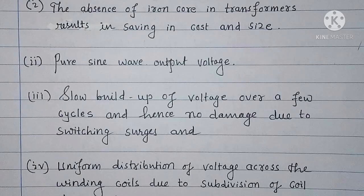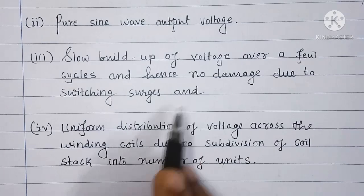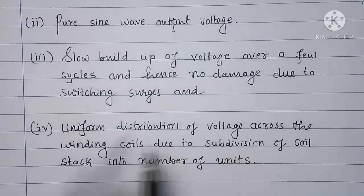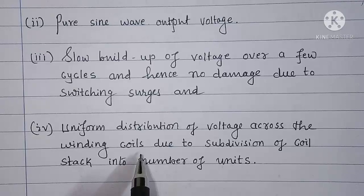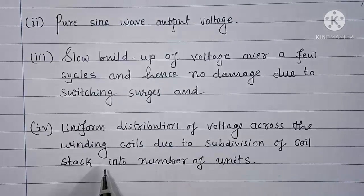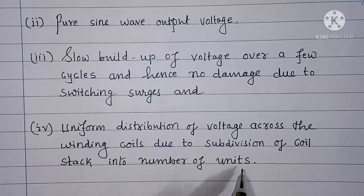Due to the absence of iron core the voltage builds up very slowly and hence there will be no damage caused to the load because of the switching surges. And since there is no iron core uniform distribution of voltage across the winding coils due to subdivision of coil stack into number of units is achieved.